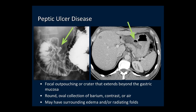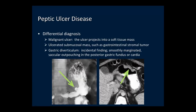On imaging, peptic ulcers are focal outpouchings or ulcer craters that extend beyond the normal gastric mucosa. On upper GI, we see an ulcer crater extending beyond the mucosa of the stomach. On CT, this ulcer crater contains air and fluid and extends beyond the normal gastric mucosa, surrounded by low attenuation edema in the gastric wall extending into the gastrohepatic ligament. The main differential diagnosis is a malignant ulcer, which is an ulcer within a mass. On CT, we can directly visualize the mass as soft tissue in the gastric wall with a central ulcer crater.